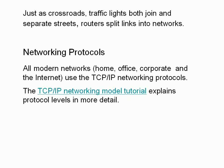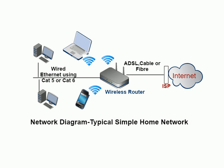The networking protocol we use on home networks, corporate networks, and on the Internet itself is the TCP/IP networking protocol — it's actually a suite of protocols. Here's a diagram of a typical home network: we have a wireless router which connects to the Internet via ADSL, fiber, or cable. It also connects wirelessly to devices on the home network, and it usually has an Ethernet hub at the back which we can connect wired devices to, as shown in the diagram.